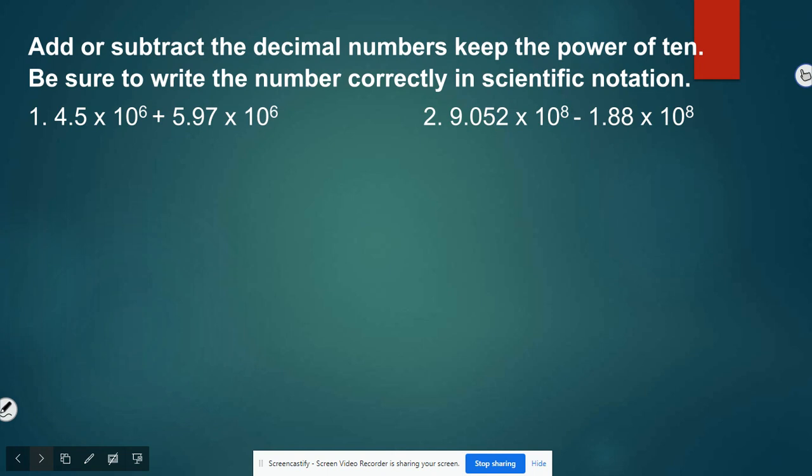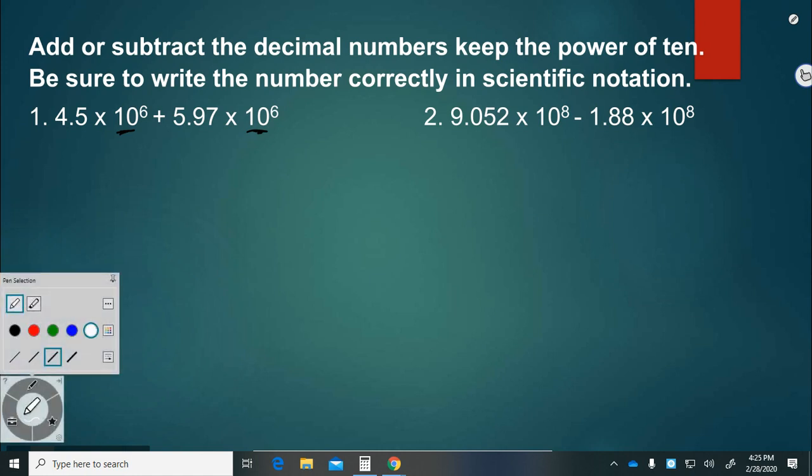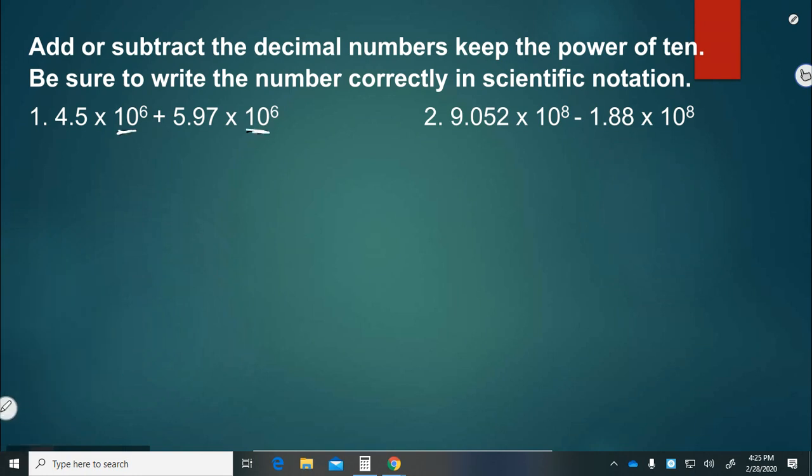So these ones are easier because the power of 10s are the same. We can keep them and add the other numbers. So simply add 4.5 and 5.97, which gives us 7 plus 0 is 7, 5 plus 9 is 14, and 4 plus 1 is 5 plus 5 more is 10. So it's 10.47 times 10 to the 6th.